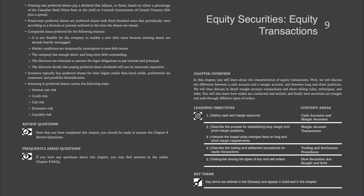CSC Volume 1, Chapter 9: Equity Securities — Equity Transactions. Overview. In this chapter, you will learn about the characteristics of equity transactions. First, we will discuss the difference between a cash account and a margin account, and between long and short positions. We will then discuss in detail margin account transactions and short selling rules, techniques and risks. You will also learn how trades are conducted and settled, and finally how securities are bought and sold through different types of orders.